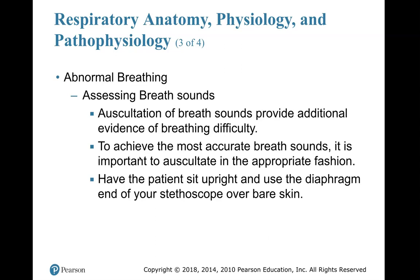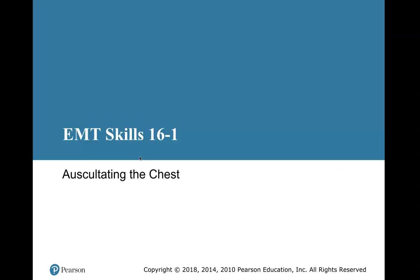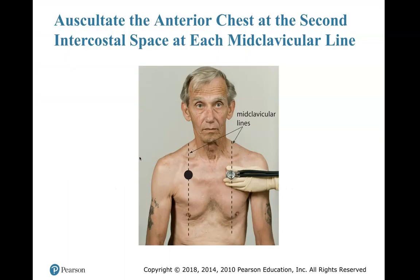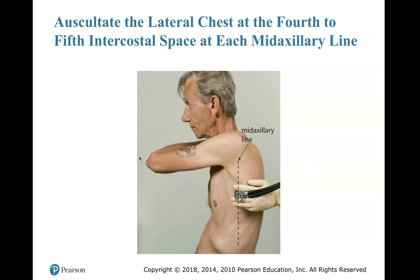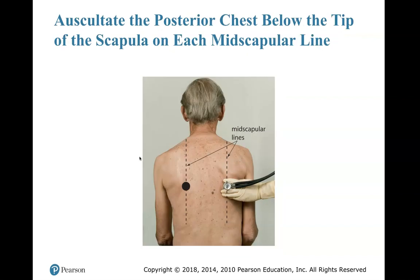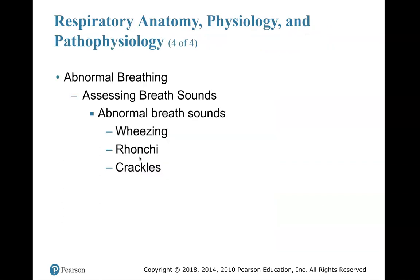To achieve the most accurate breath sounds, it is important to auscultate in the appropriate fashion. Have the patient sit upright and use the diaphragm end of your stethoscope over bare skin. In the front, over the mid-clavicular lines, above the mid-sternum area. There is the mid-axillary line, just above the nipple line. Mid-scapular lines, just below the scapulas. Abnormal breath sounds are wheezing, ronchi, and crackles.